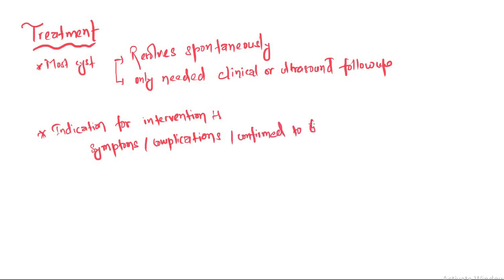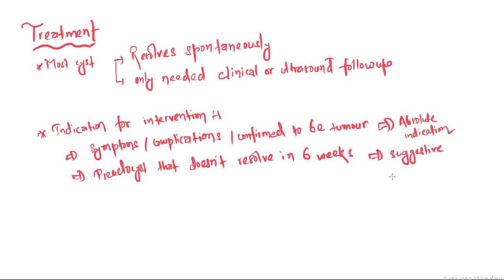But the indications for intervention are: either the cyst is symptomatic, the cyst is presenting with complications, or it is a confirmed tumor. All of them are absolute indications for intervention. But pseudocyst that doesn't resolve in six weeks is a suggestive indication—it suggests intervention, but it's not absolute.